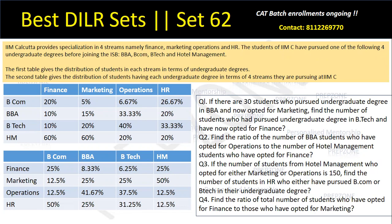So let's understand what the set says. IIM Calcutta — this is a campus which is very close to my heart and hence this set is based on IIM Calcutta. IIM Calcutta provides specialization in four streams, namely Finance, Marketing, Operations, and HR. The students of IIM Calcutta have pursued one of the following four undergraduate degrees before joining: it can be either BBA, BCom, BTech, or Hotel Management.